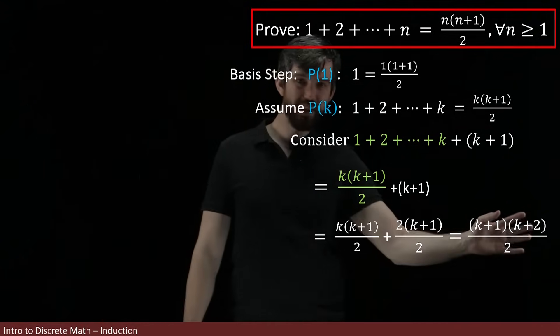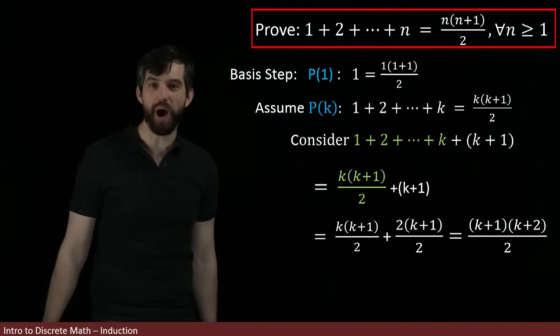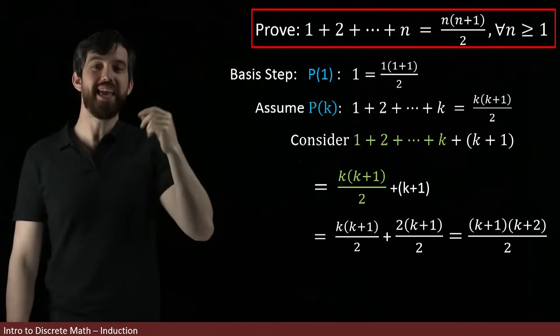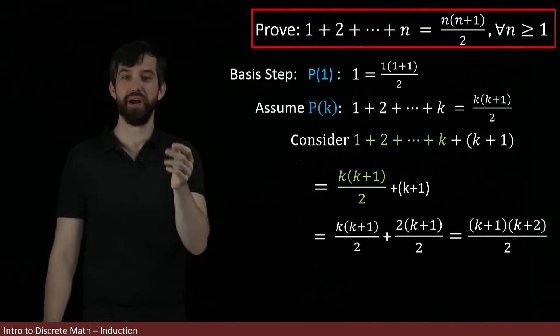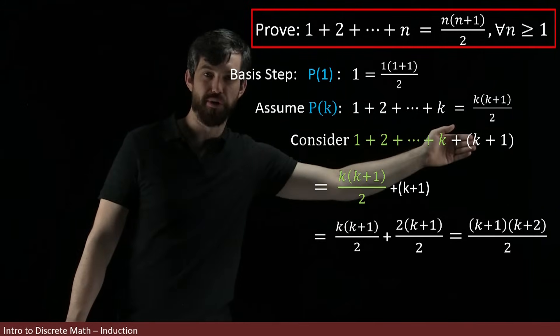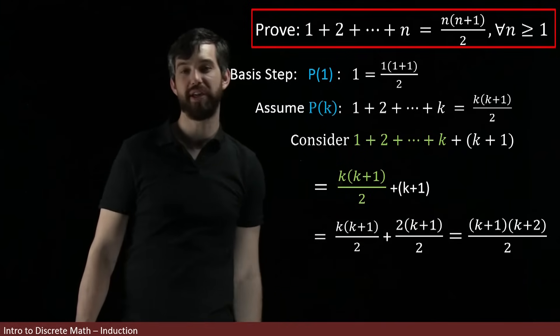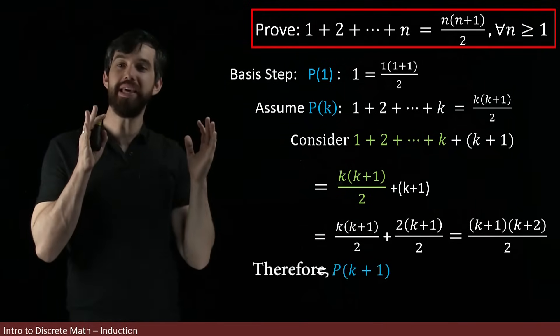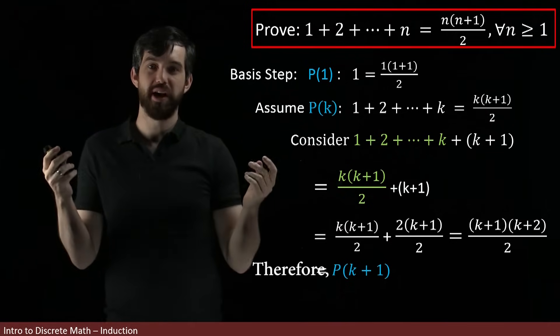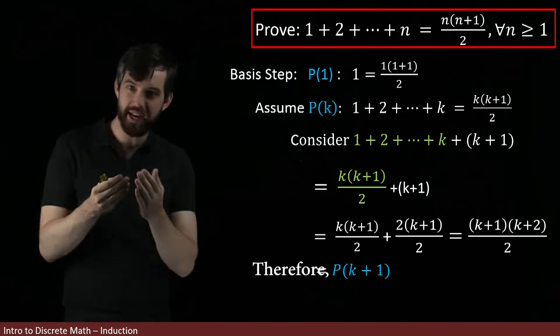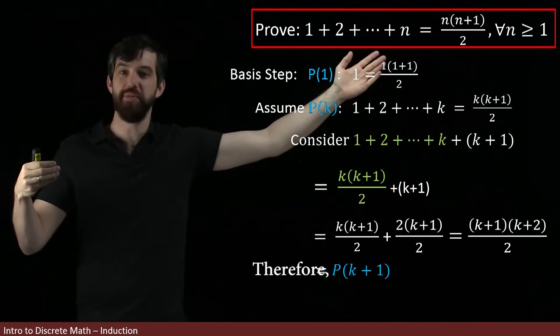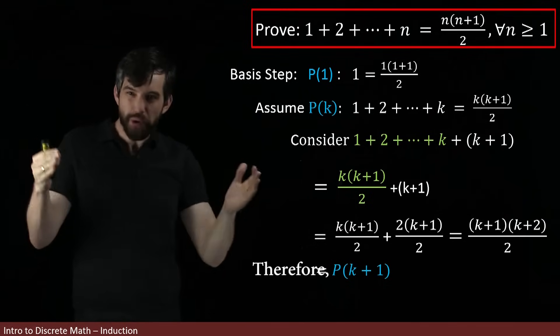But this formula that I have here, that's exactly what I want. This formula is this one here, but with k plus 1 plugged in for n. So in other words, what I got is an equality. The sum of the first k plus 1 terms is that special formula for k plus 1. In other words, I have shown P(k+1).